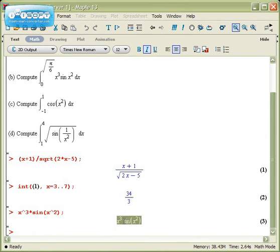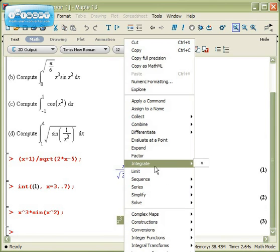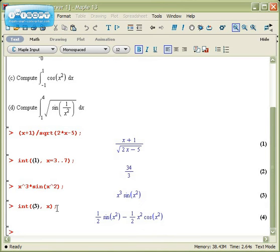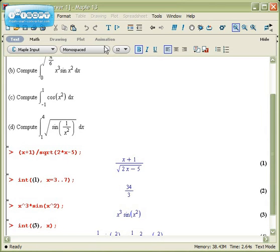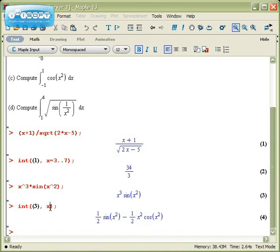The next thing I'm going to do is I'm going to integrate this by right clicking. Now that integration gets me an indefinite integral, an antiderivative. I need to go and put on the limits from 0 to the square root of pi over 6. So I'll go back to this command and I'm going to modify it.